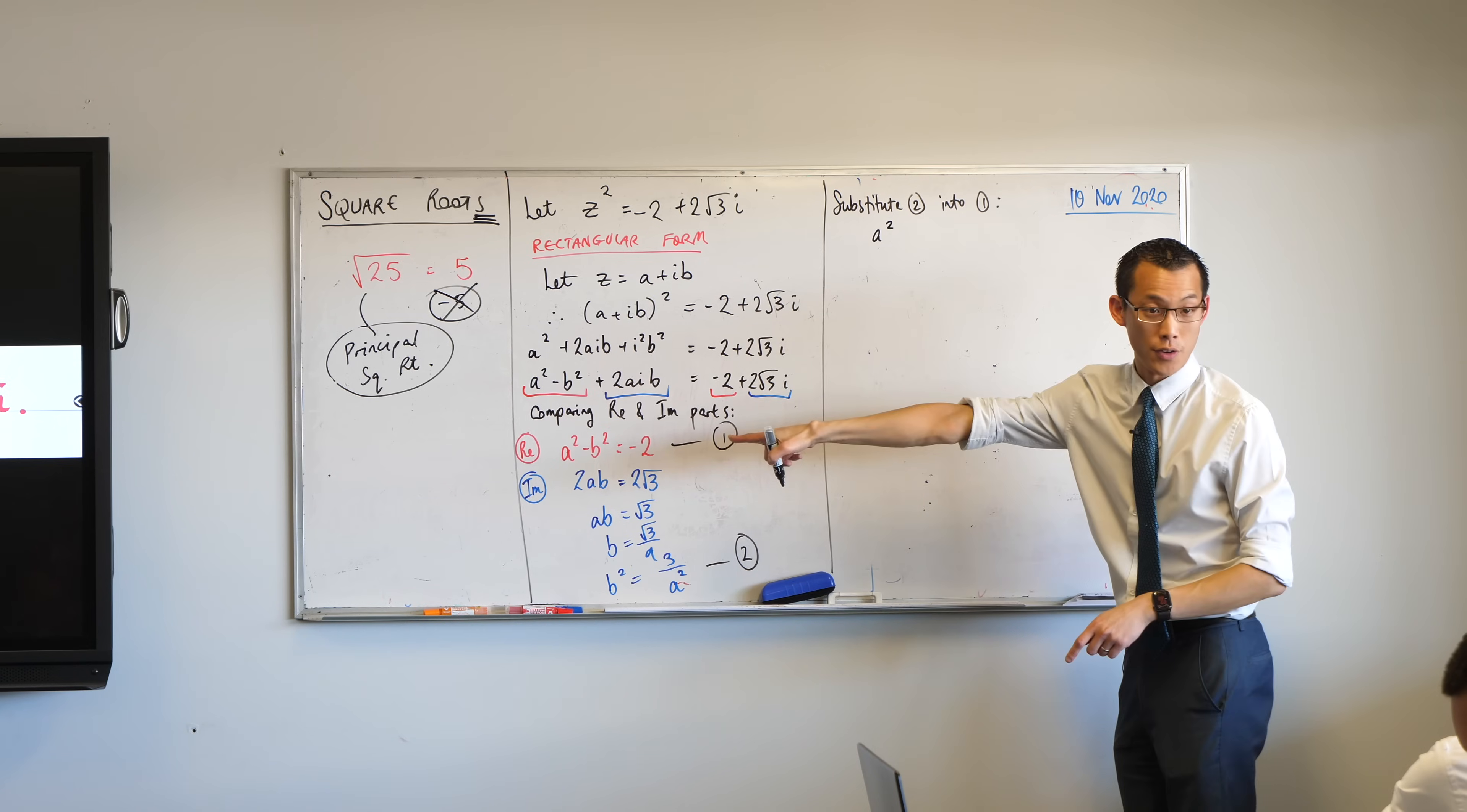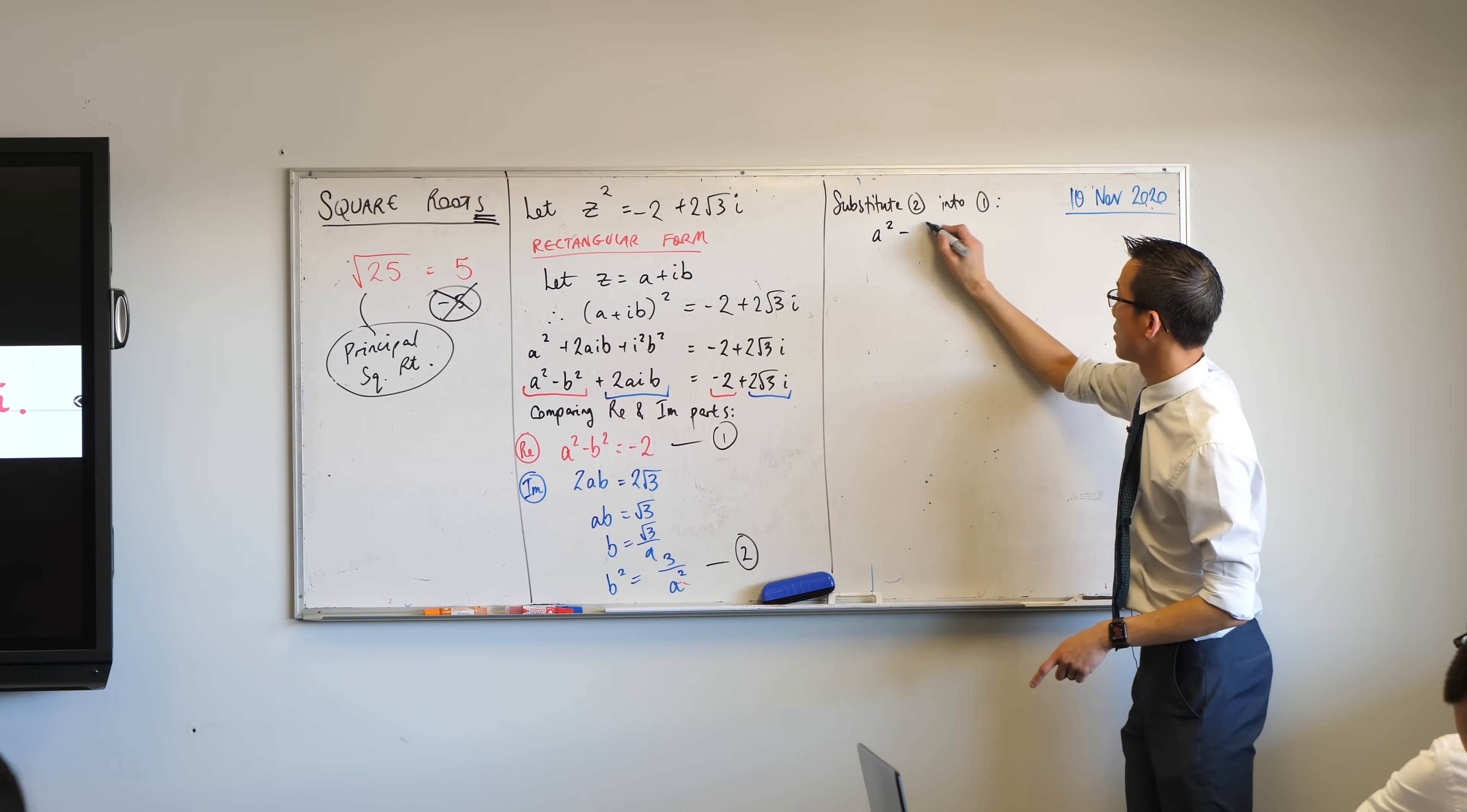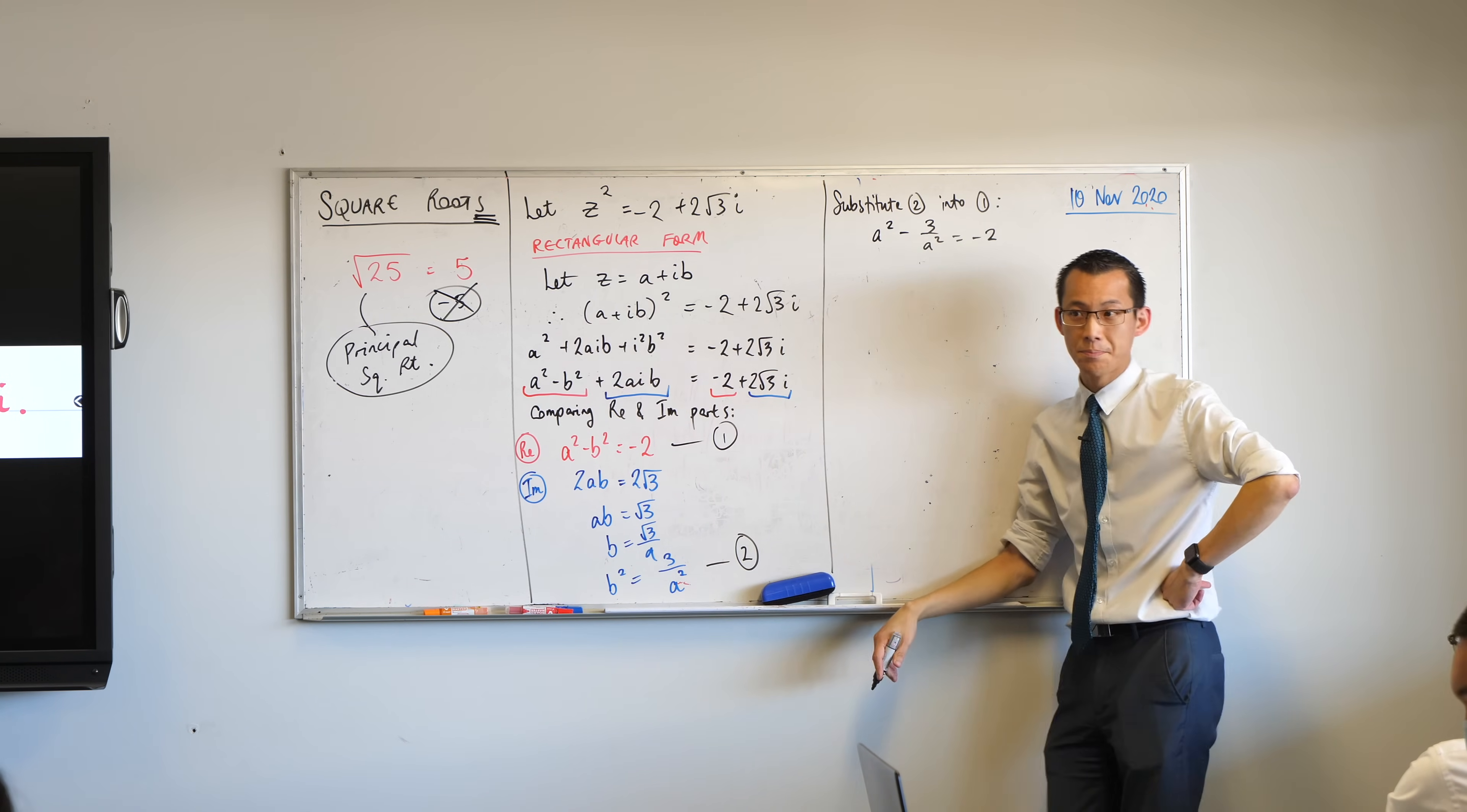I go a squared, there's the first bit, minus that, that's b squared, isn't it? Minus three on a squared, which equals, what did we say was equal to? Negative two. Yep.